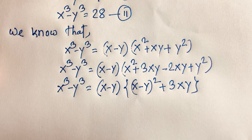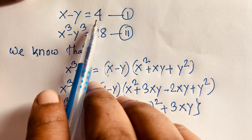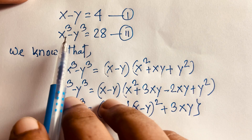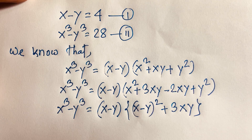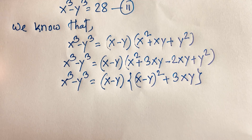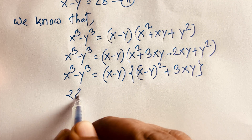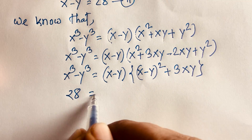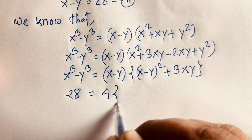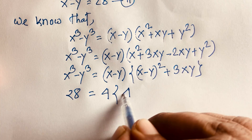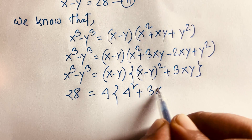Our first equation is x minus y equals 4, and our second equation is x cubed minus y cubed equals 28. So I can say x cubed minus y cubed equals 28, which equals x minus y — that is 4 — times 4 squared plus 3xy.